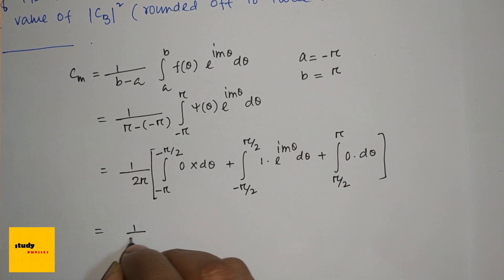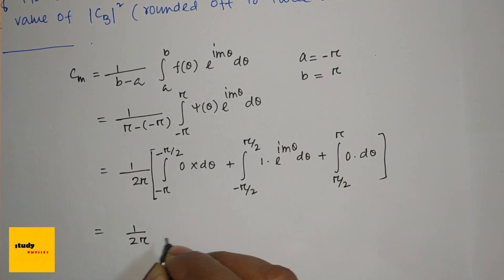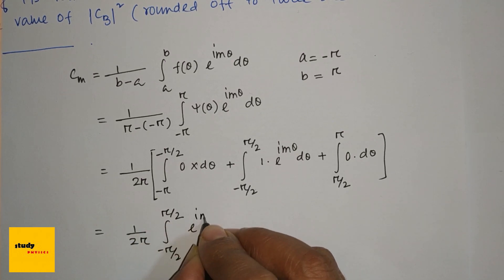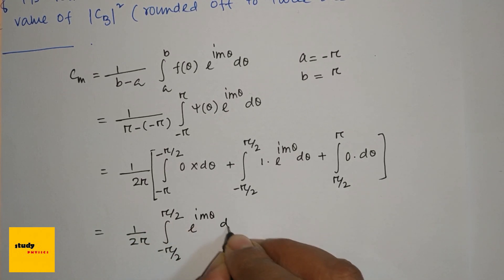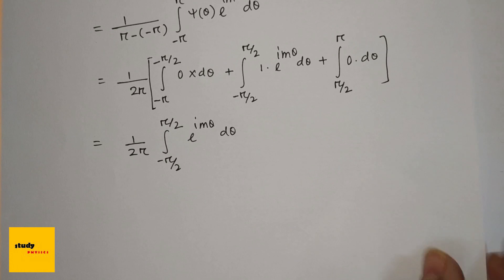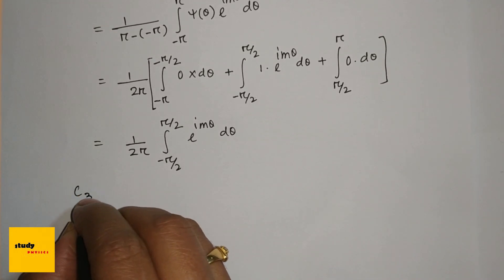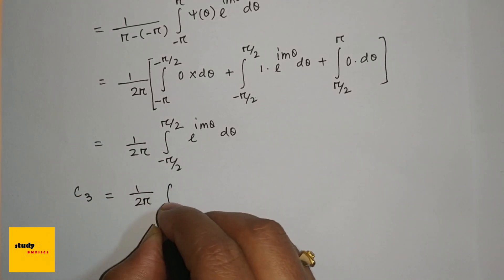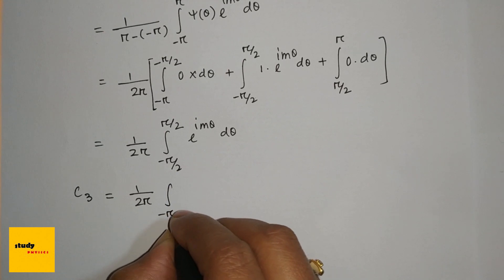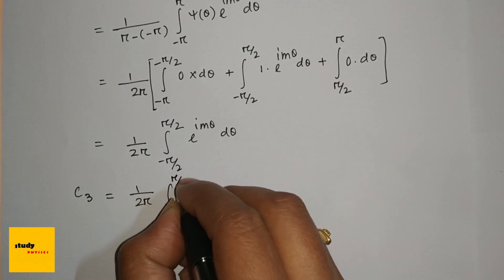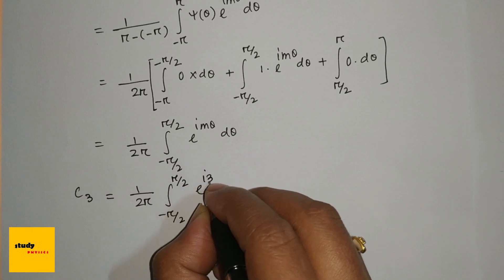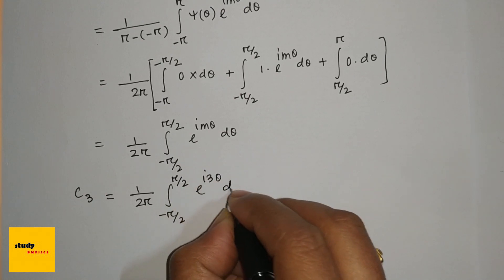This simplifies to 1/(2π) · ∫_{−π/2}^{π/2} e^(imθ) dθ. For c₃, we set m = 3, giving c₃ = 1/(2π) · ∫_{−π/2}^{π/2} e^(i3θ) dθ.